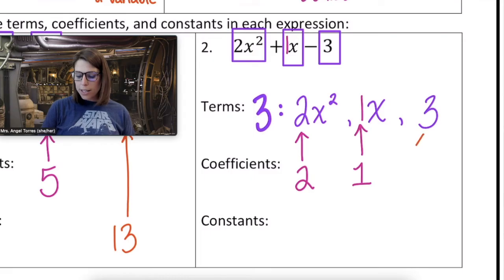What does that leave for our constant? The number without the variable, 3.